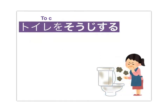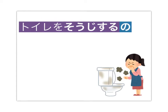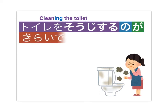Toire wo soji suru — to clean the toilet. Add no to the short version of the verb; of course this turns it into a noun phrase: cleaning the toilet as an activity. Add ga, and follow with the details: kirai desu. Toire wo soji suru no ga kirai desu: I hate cleaning the toilet.